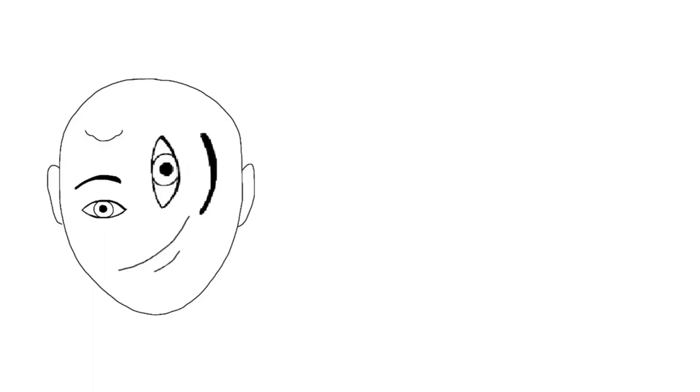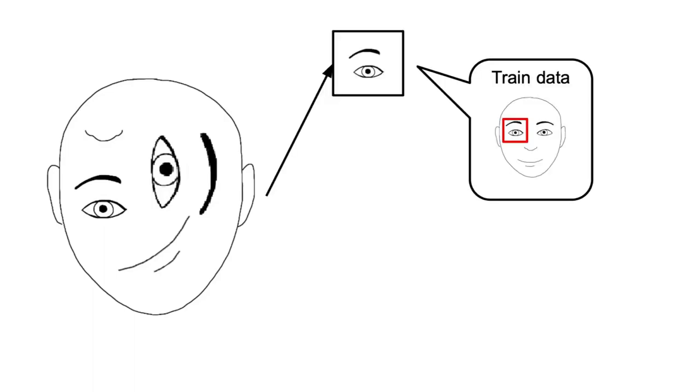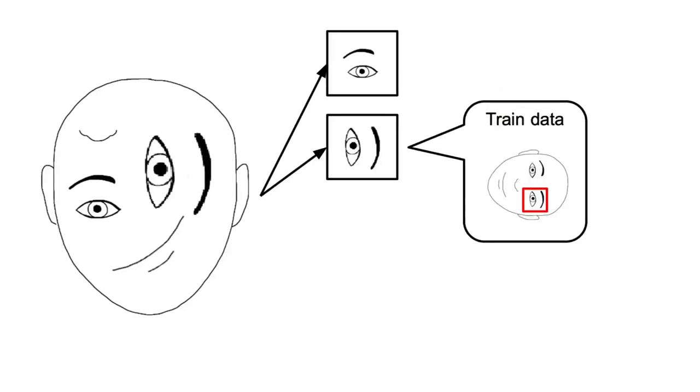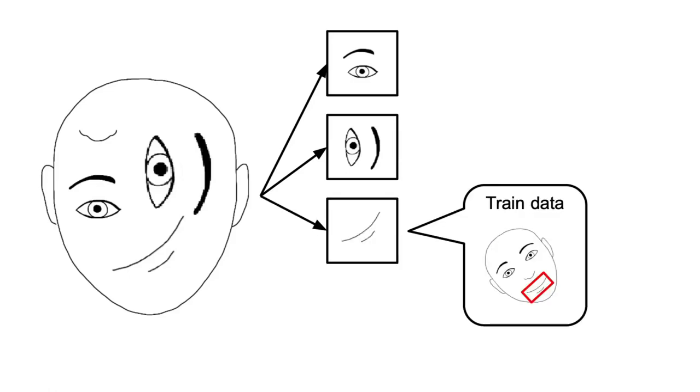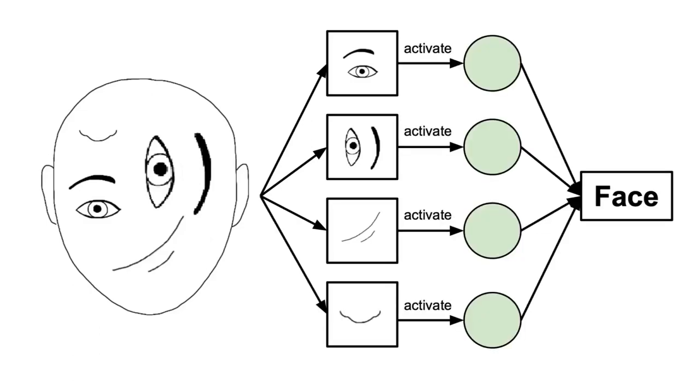To illustrate those concepts better, let's take a look again at this harder example. What a CNN model could see is that there is an eye that resembles some training samples, so some neurons would activate. Here is another eye that resembles some training samples, so another neuron would fire. The mouth would also resemble some training samples, and in the end, it would conclude that this is indeed a face, which is obviously not really true.